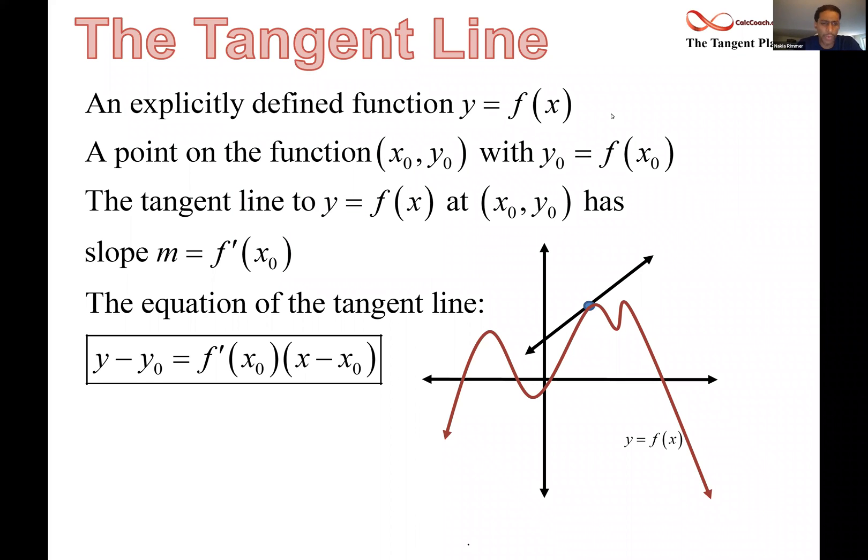Remember y minus y1 equals m times x minus x1. So it would be y minus y naught equals f prime at x naught times x minus x naught, because that's what your m is, f prime at x naught. This is your point slope form.